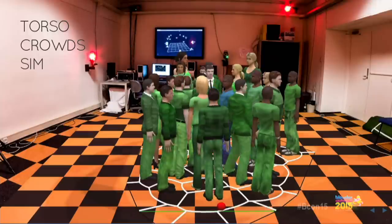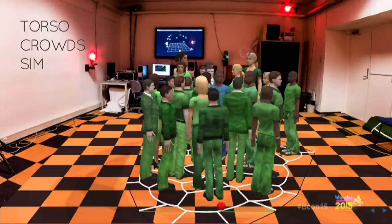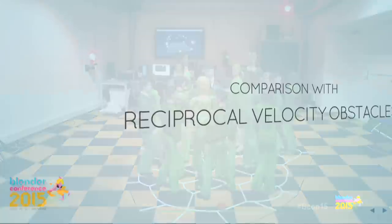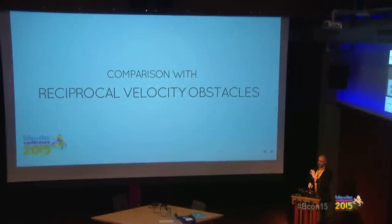I'm really happy with the whole transitioning between sidestepping and forward walking, which is possible because of our asymmetrical agent. Once we had the system working, we wanted to compare it to a competitor. A really good one is Reciprocal Velocity Obstacles (RVO) — a very nice crowd simulation system used for huge crowds, producing smooth behavior, with freely available source code for non-commercial use.